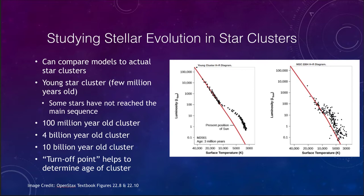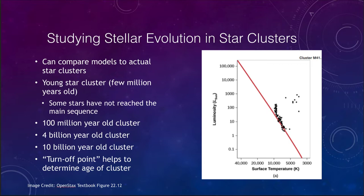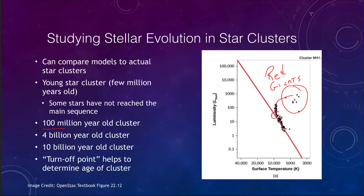We can also look at older clusters. At about 100 million years old, we begin to see that all stars have reached the main sequence, but stars in the upper portion are now evolving off and becoming red giants. This creates what we call the turnoff point — the point at which stars are beginning to leave the main sequence. The location of this turnoff point is a way to determine the age of a cluster.